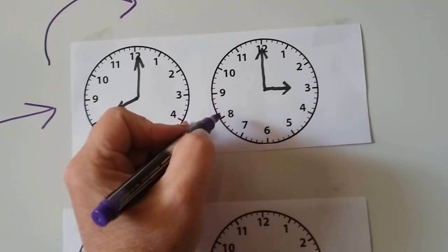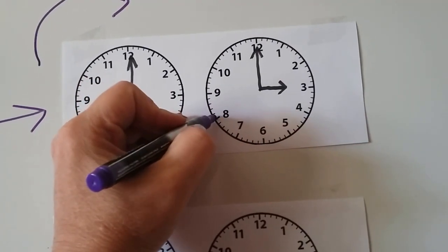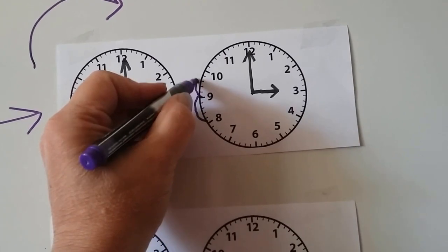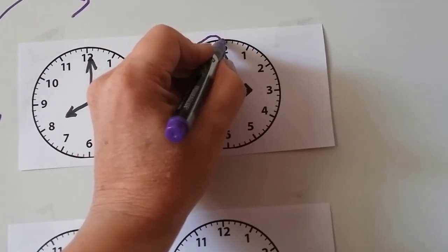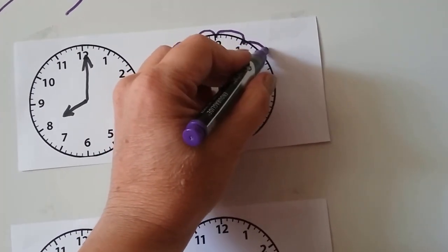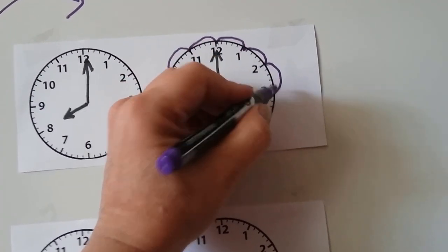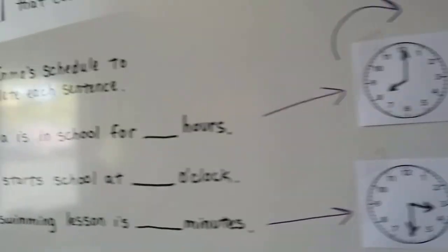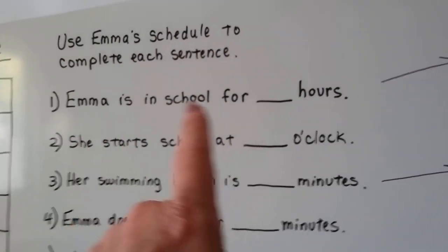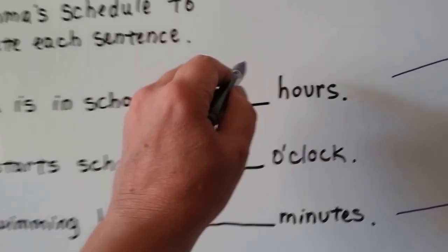So if the hour hand is pointing here, we can go 1 hour, 2 hours, 3 hours, 4 hours, 5 hours, 6 hours, 7 hours. We did 7 hops. So we know from the schedule that Emma is in school for 7 hours.